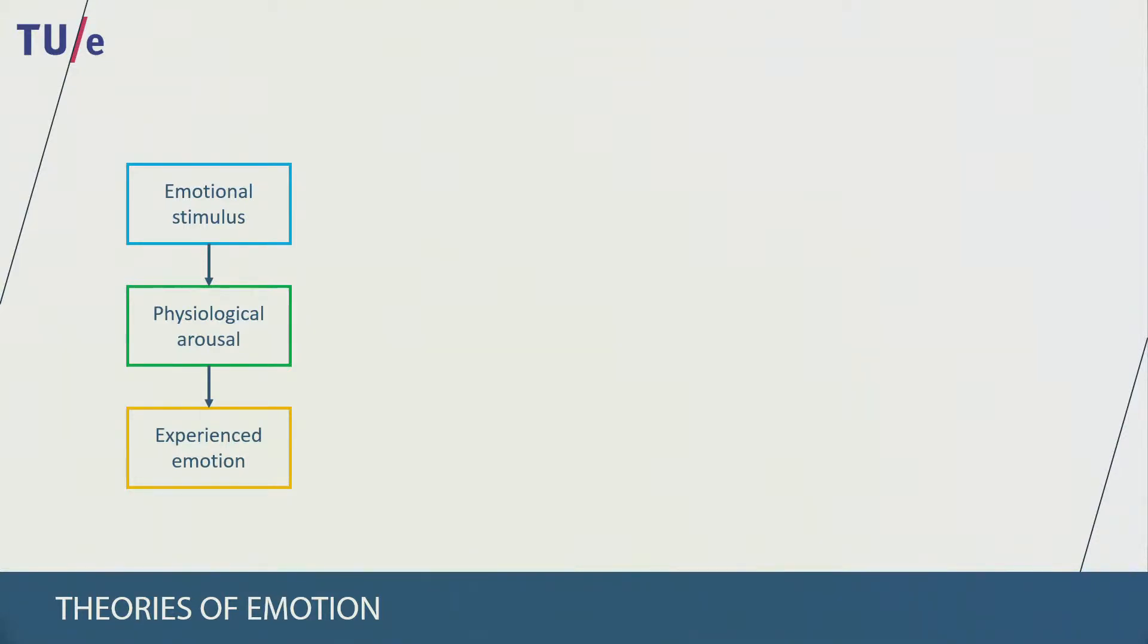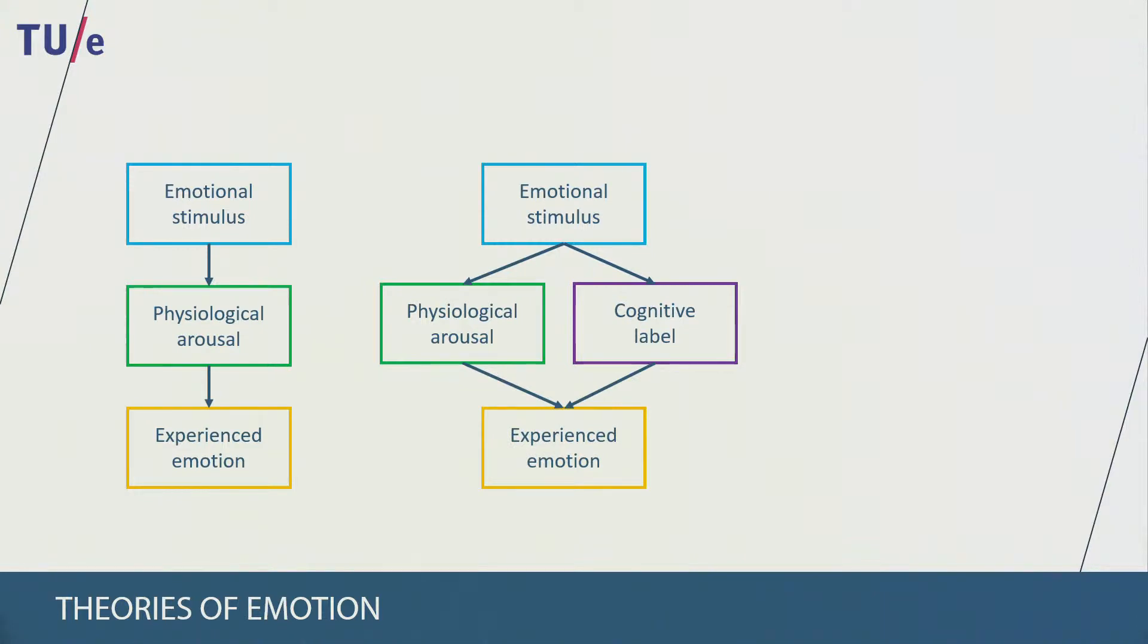The second theory is the Schachter-Singer theory of emotion. This theory states that an emotional stimulus causes two events at the same time: physiological arousal and a cognitive label that we assign to it. These two components together lead to us experiencing an emotion. Could you think about which of these two theories is more likely to be true?